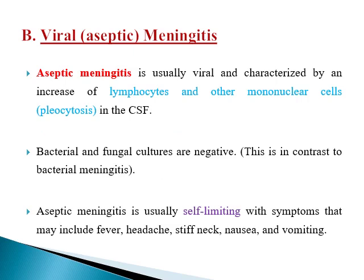Viral meningitis is also called aseptic meningitis, which means there is no or very little pus formation. The main cell found in the CSF is lymphocytes, or other mononuclear cells, in what we call pleocytosis. This is one difference from bacterial meningitis. Another difference is that bacterial and fungal cultures are all negative, because viruses do not grow on conventional cultures — they need cell culture to grow. Also, in aseptic meningitis, the condition is usually self-limiting and less severe.